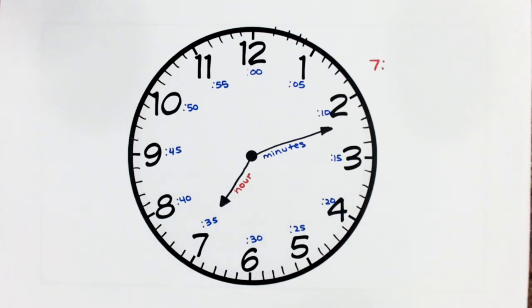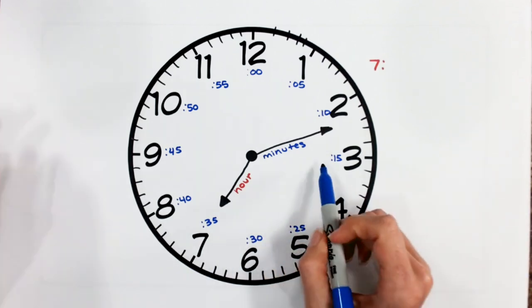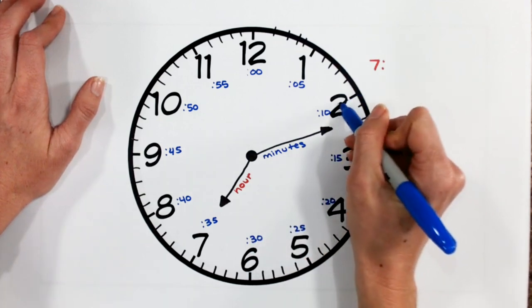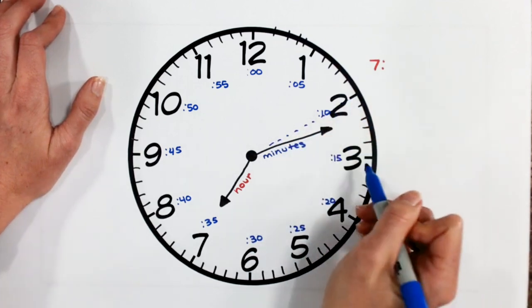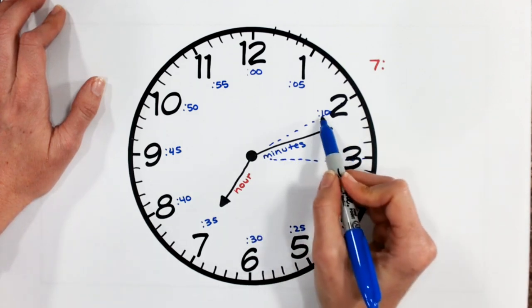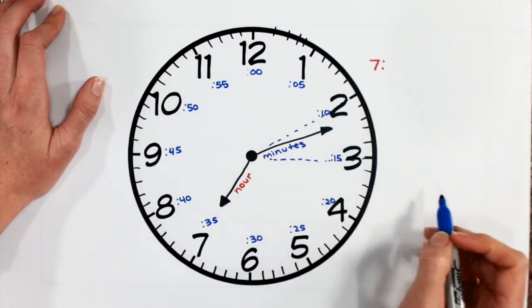Now let's look at my long minutes hand. I see that my long hand is in between my two and my three. So my minutes is going to be between the 10-minute and 15-minute mark.